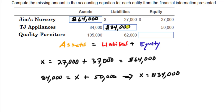I know I keep talking through these problems and they're pretty easy, but talk your way through it as you do it — that's how you're going to learn it and it will really help when you get into harder accounting problems. Quality Furniture at some moment in time has $105,000 worth of physical property. Of all that property, $62,000 is claimed by liabilities. If Quality Furniture sells off all its assets, it must first pay off $62,000 to creditors.